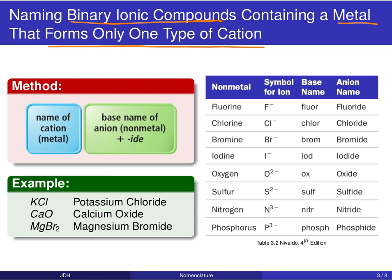Looking at those first two columns — the alkali and alkaline earth metals — the first column always takes a +1 charge, the second column always takes a +2 charge, and aluminum takes a +3 charge. For these cases where only one type of metal cation is formed, the method is relatively straightforward: you start off by writing out the name of the cation.